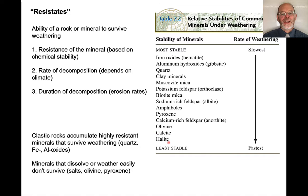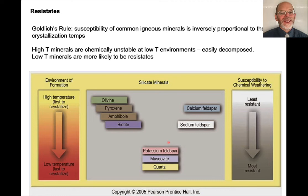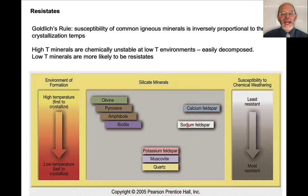You may notice that the weatherability of minerals follows Bowen's reaction series — and that's exactly right. High temperature minerals are chemically unstable in low temperature environments, so they react very readily. Olivine, pyroxene, amphibole, and biotite tend to be very unstable at Earth's surface. Potassium feldspar is moderately stable and quartz is very, very stable. Within plagioclase feldspar, calcium feldspar reacts very quickly, sodium feldspar reacts with time but is less susceptible. The susceptibility table largely reflects Bowen's reaction series.